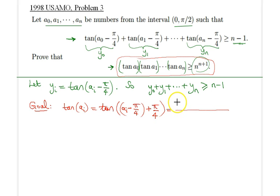We all know that that would give tangent a sub i minus π over 4 plus tangent π over 4, all divided by 1 minus tangent a sub i minus π over 4 times tangent π over 4.